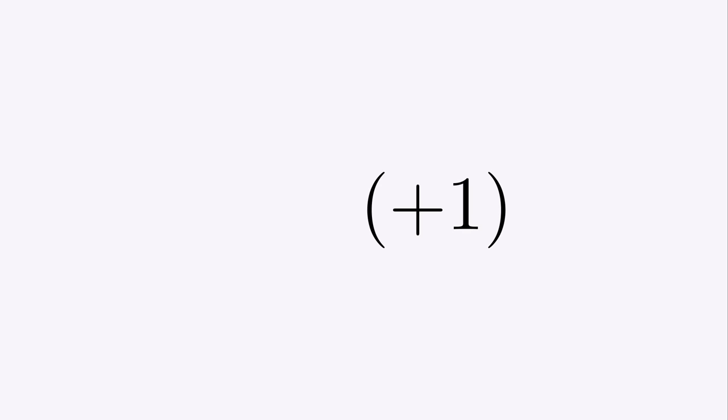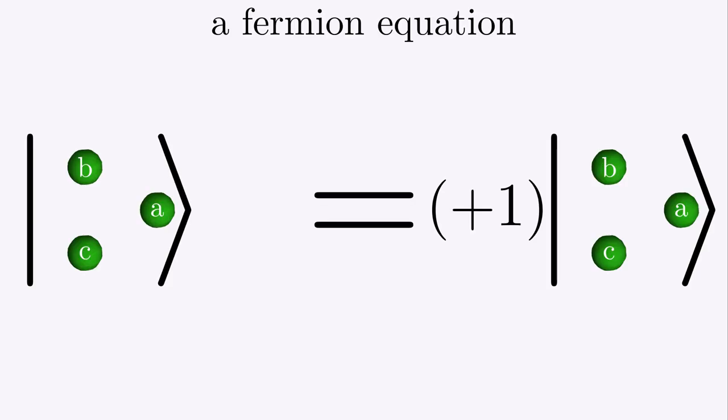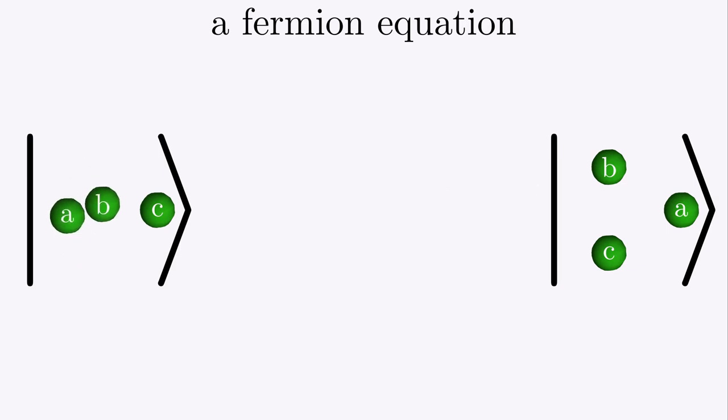Now we're ready for the quantum mathematics of fermions. Here's how it works. When we swap two identical fermions, the quantum mathematics says that we times by minus one. Every time we swap two guys over here, the sign flips over here. Minus one, swap, plus one, swap, minus one. And it keeps going on like that.